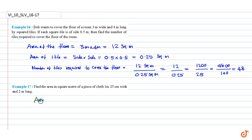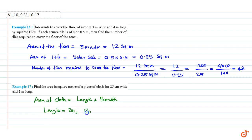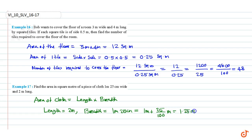The area of cloth equals length into breadth. Length is equal to 2 meters, and breadth is equal to 1 meter 25 centimeters. This equals 1 meter plus 25 divided by 100 meters, which equals 1.25 meters. We note that 1 meter equals 100 centimeters.